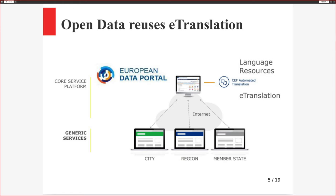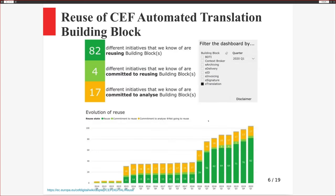There is also a proof-of-concept integration with the Drupal content management system. Drupal is a system that simplifies building content websites, similar to WordPress. The main benefit of this integration is that out of the box you can build an English or any EU language Drupal website, and this website will provide translation into other member states' languages. Right now there are 82 different systems where the translation block is already in place and used in production, and also 21 systems are trying to integrate this module.